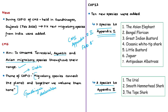The 7 species added to Appendix 1 are Asian elephant, Bengal florican, Great Indian bustard, oceanic whitetip shark, little bustard, jaguar, and antipodean albatross. These are species in danger of extinction throughout all or a significant portion of their range, and hence they needed strict protection, which is why they were added to Appendix 1 of the CMS convention.